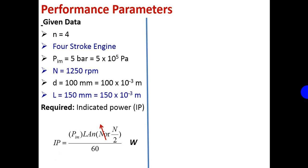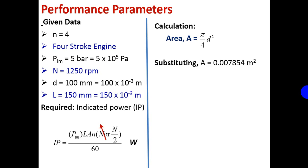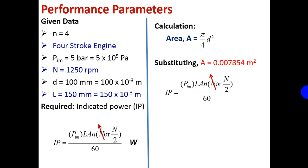The formula to calculate IP is: P × L × A × N × (N/2) / 60, where we use N/2 because it is a 4-stroke engine. The unit is watts. Area A = π/4 × D² = 0.007854 m². Substituting all values, we get IP = 24,543.69 watts. Converting to kilowatt — always express IP in kilowatt — the final answer is IP = 24.544 kW.